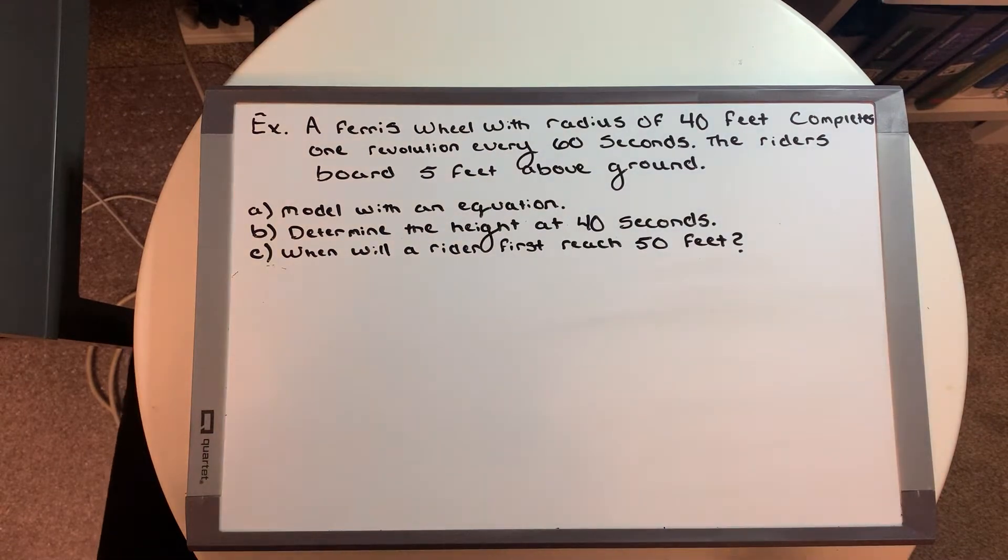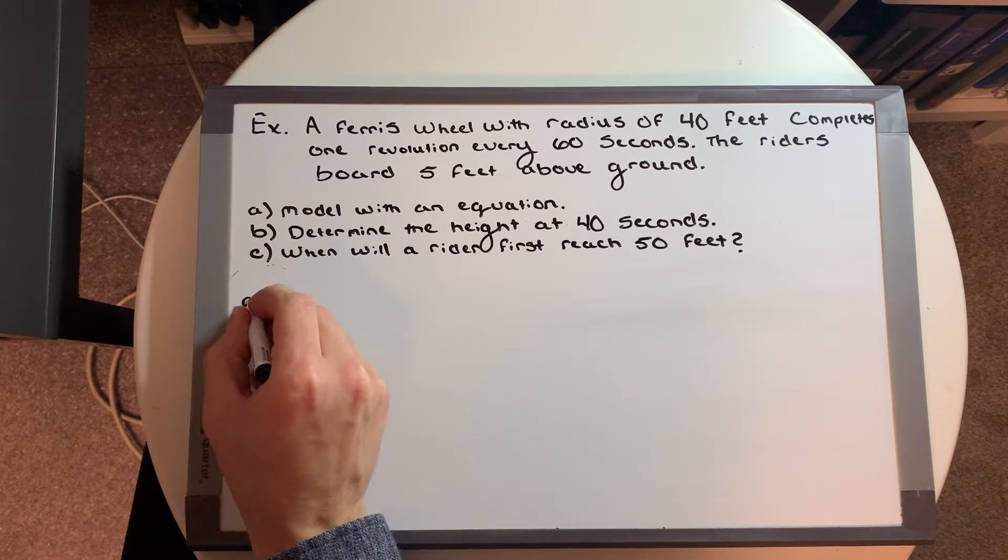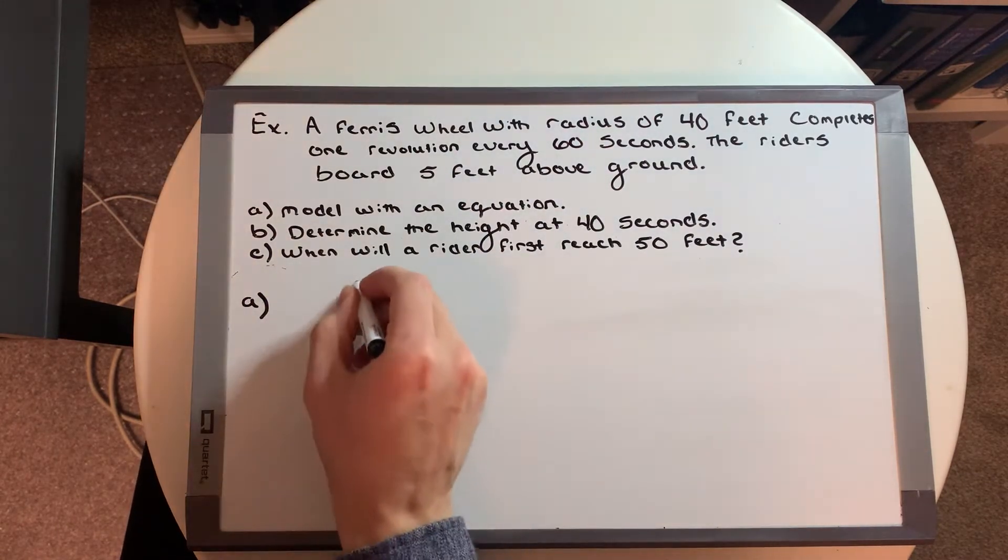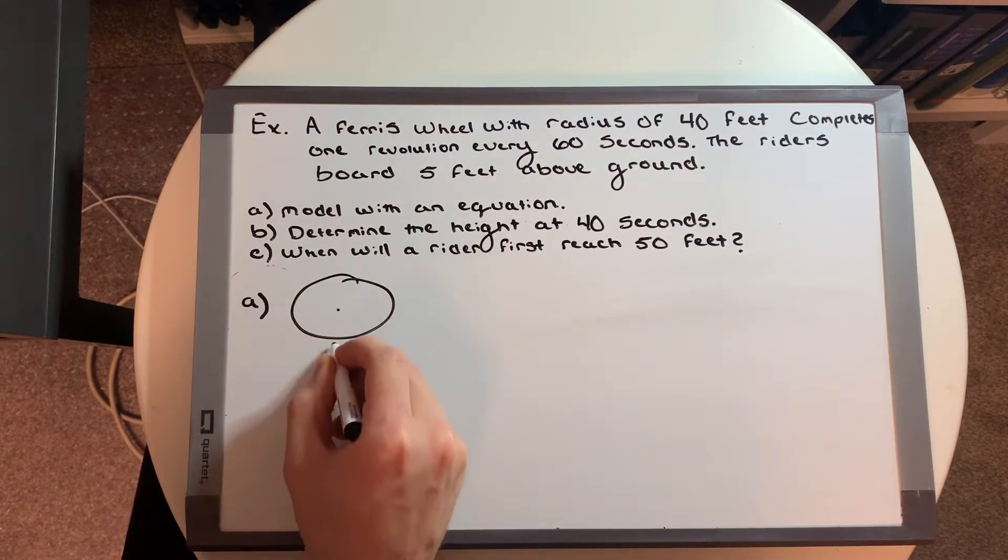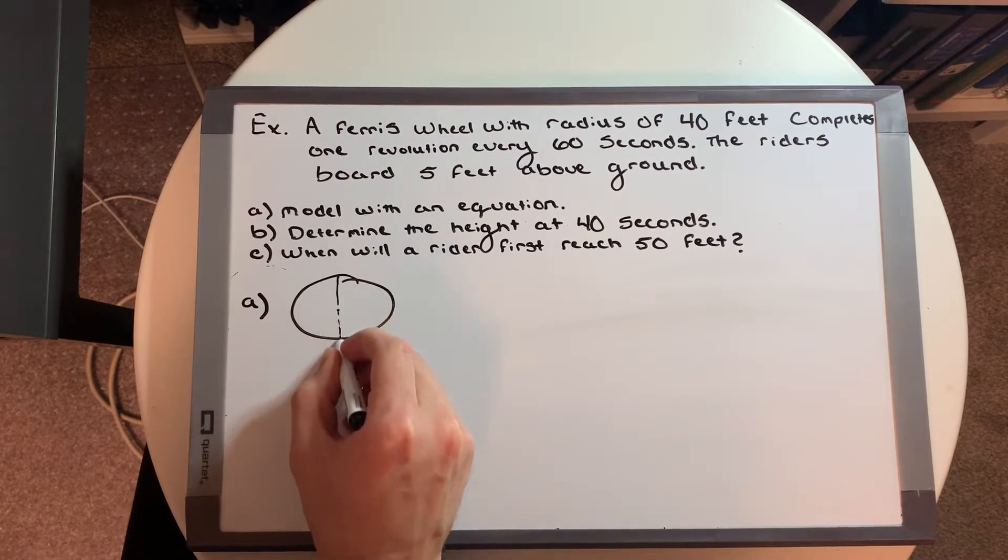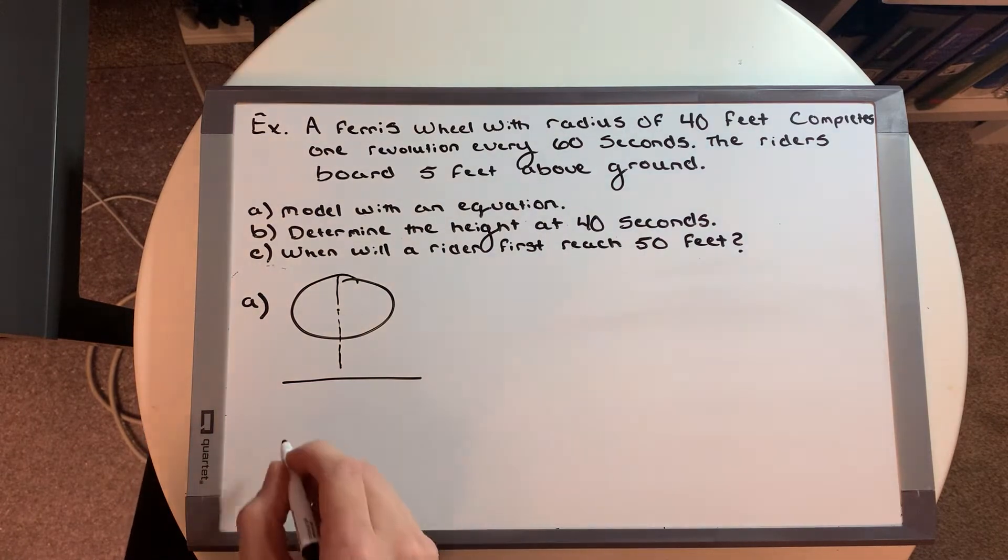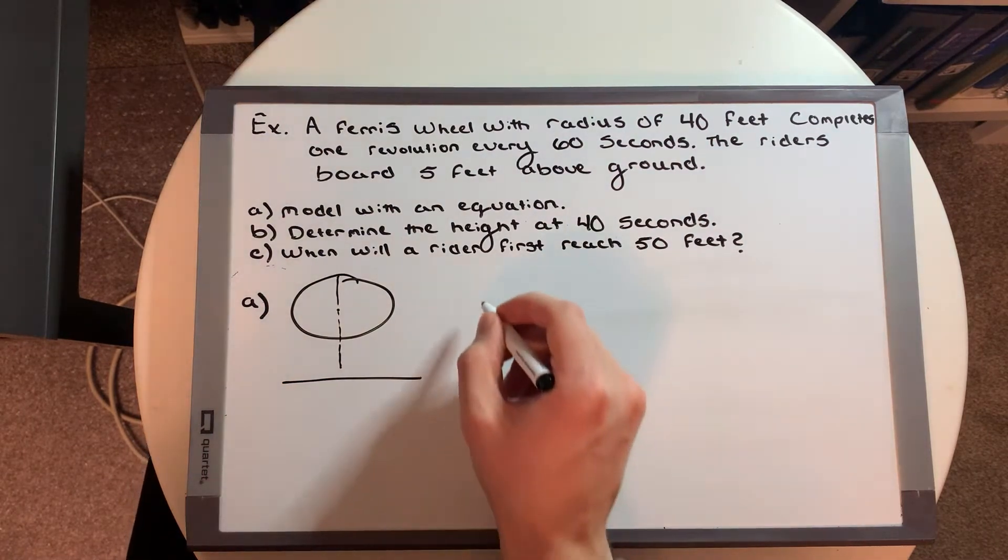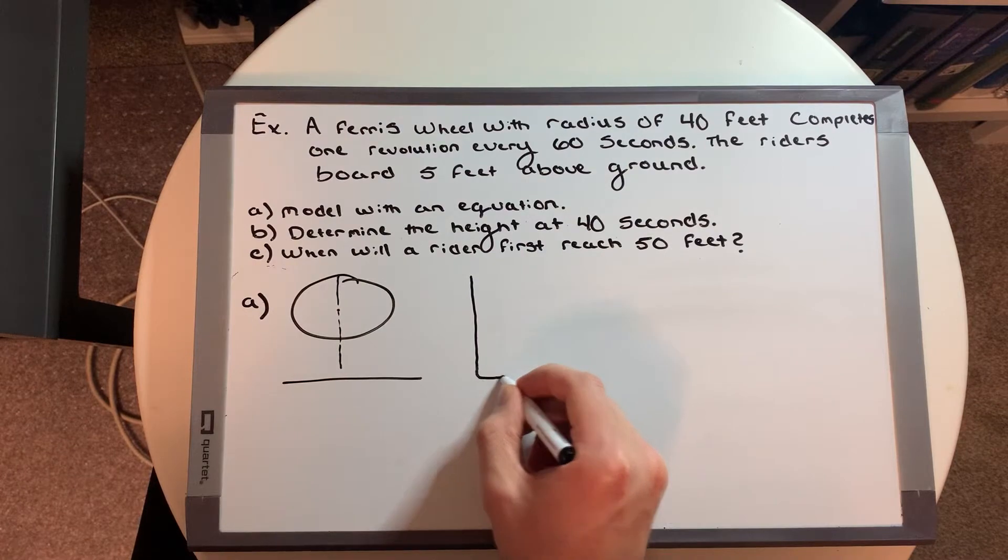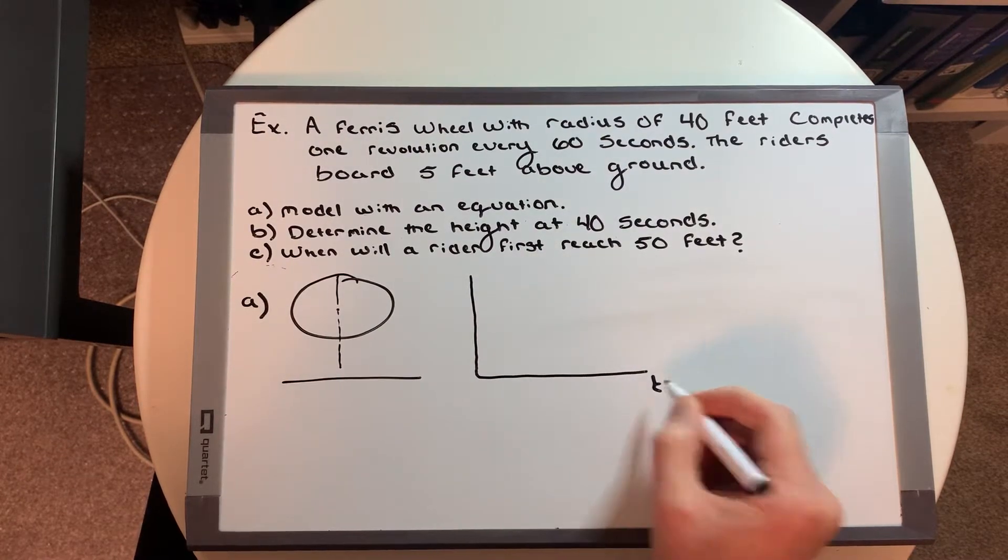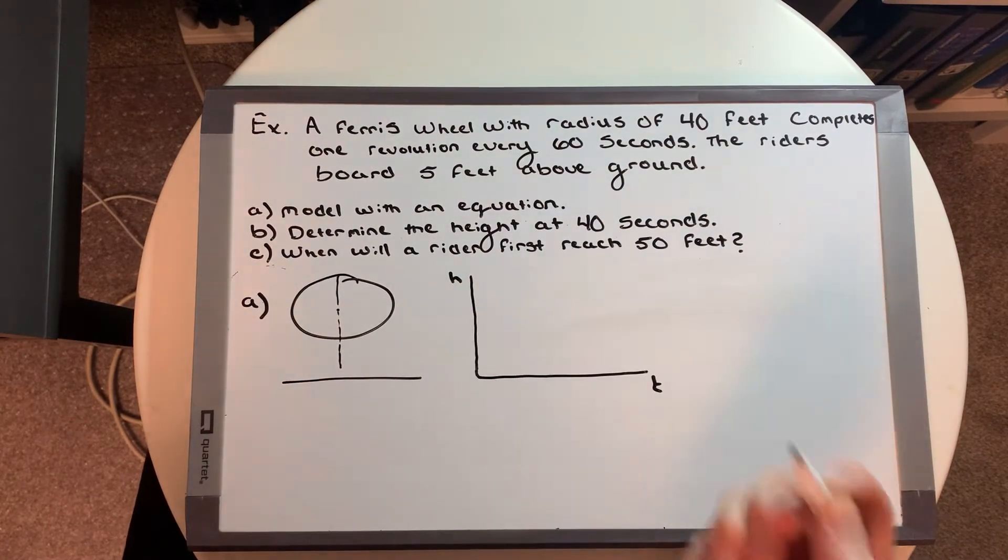Part A says, let's model this with an equation. What we're going to have to realize is that having diagrams is really important for this. So let's draw a circle with a line down the middle just for our stand, and then let's draw our graph off to the side here. That's labeled time on the x-axis and height on the y-axis.